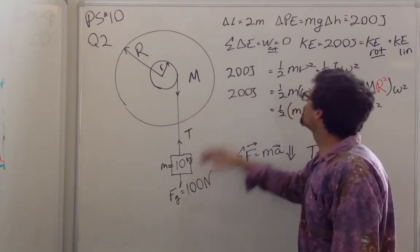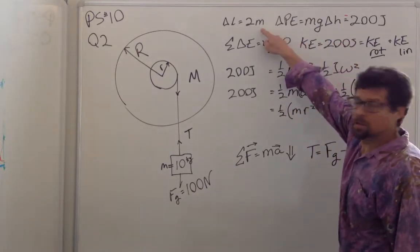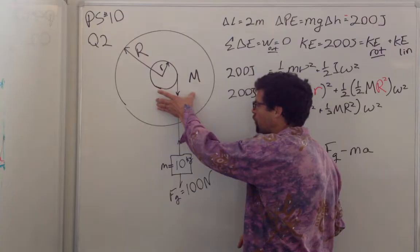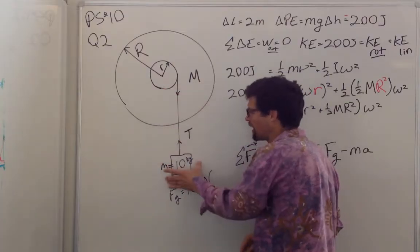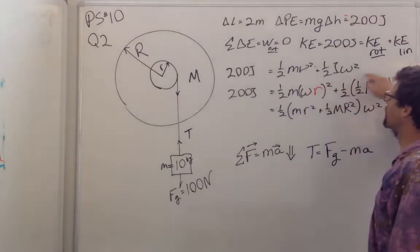But now that same 200 joules, 100 newtons times 2 meters, is not just going into this wheel but it's being shared by the wheel and by this mass. We add that extra term in when we conserve energy.